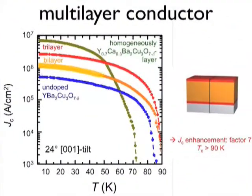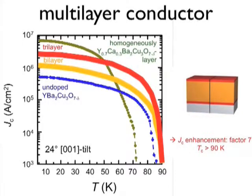Therefore, we have an increase in the critical current density in the whole temperature range for such bilayer and trilayer configurations. At 77 K, we have an increase in the critical current density of about a factor of 7.